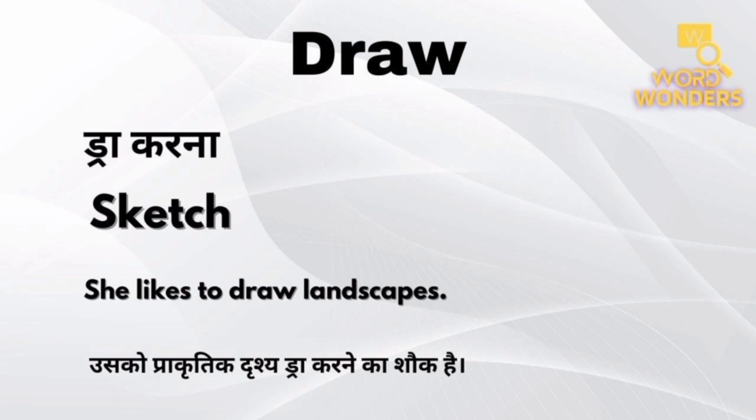For example: She likes to draw landscapes. Meaning: उसको प्राक्रितिक द्रिश ड्रौ करने का शौक है.